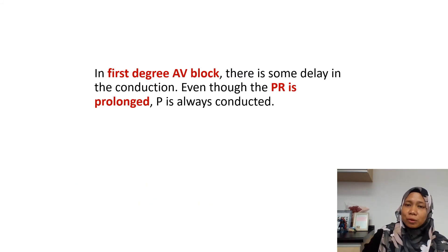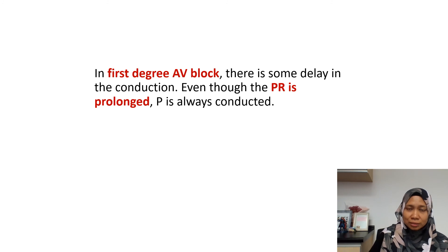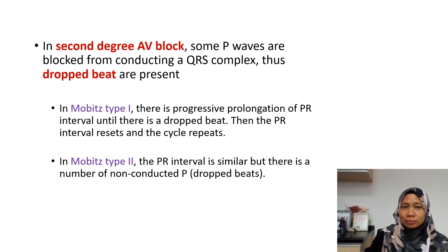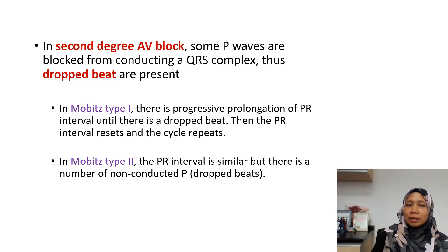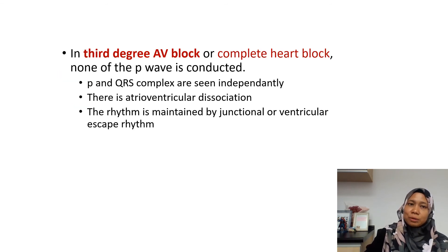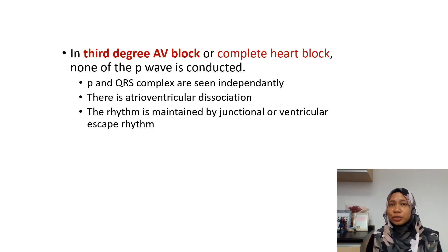In first degree AV block, there is some delay in conduction. Even though the PR is prolonged, the P wave is always conducted. In second degree AV block, there are P waves that are not conducted — what we call dropped beats. In Mobitz type 1, there is progressive prolongation of the PR interval until there is a dropped beat, then the cycle resets. In Mobitz type 2, the PR interval is similar throughout, but there are non-conducted P waves or dropped beats. In third degree AV block, or complete heart block, none of the P waves are conducted.